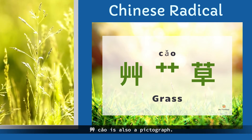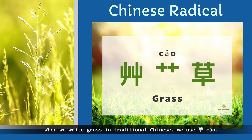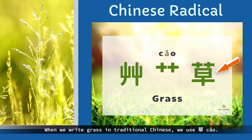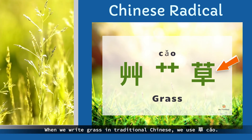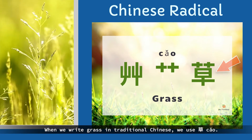草 is also a pictograph. When we write grass in traditional Chinese, we use 草.